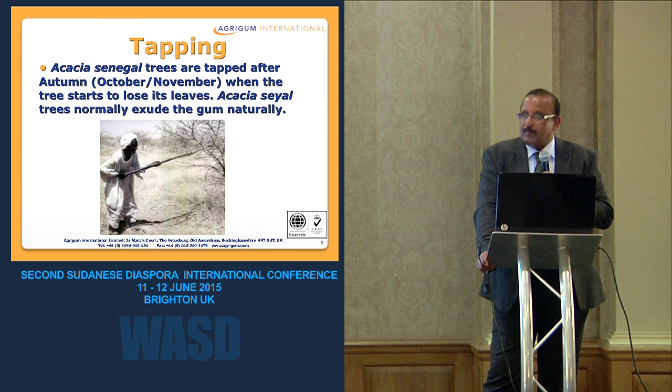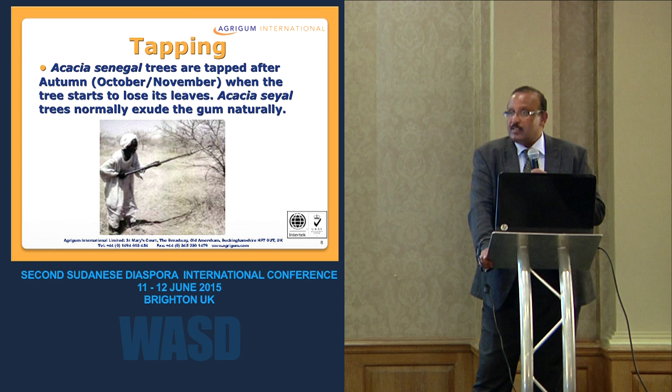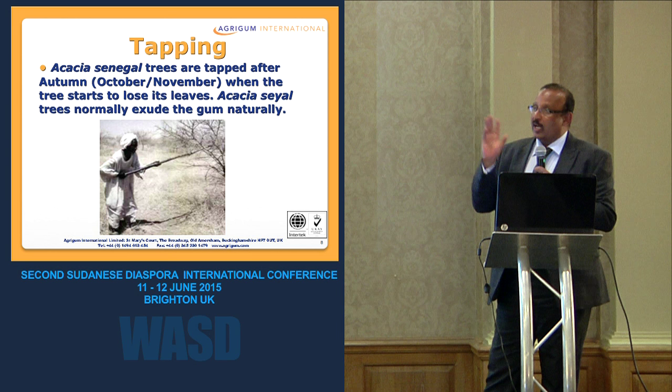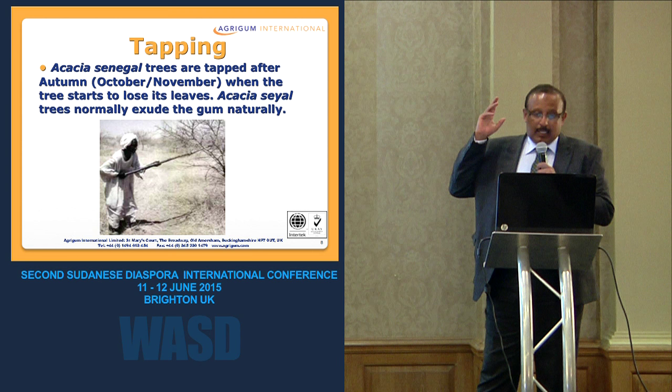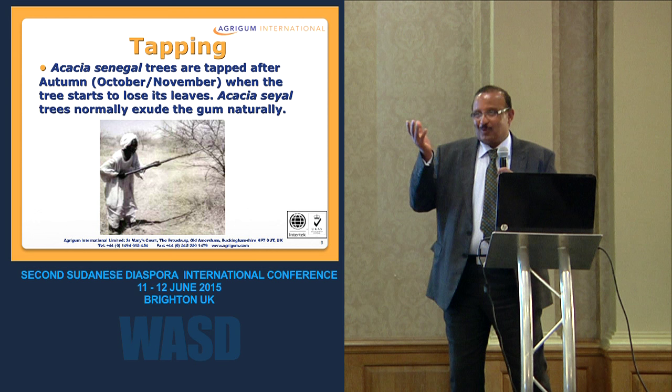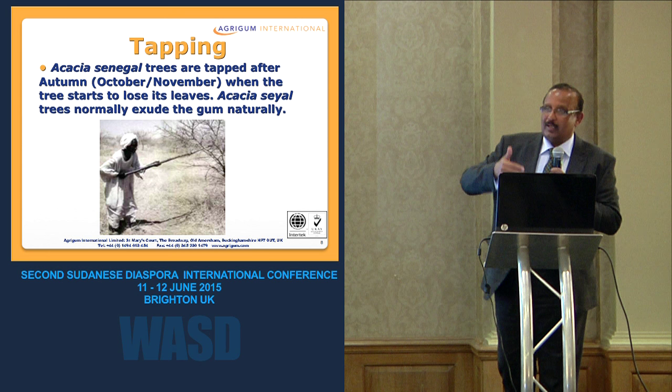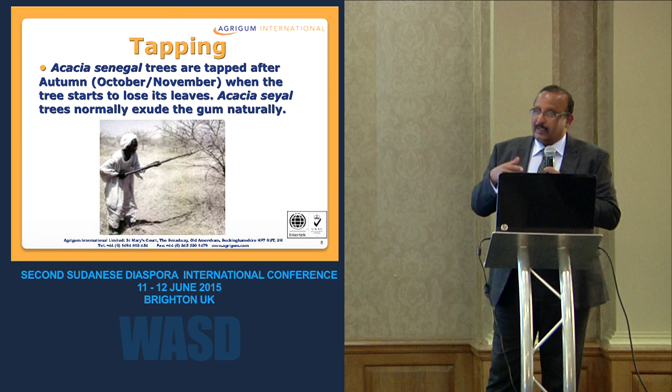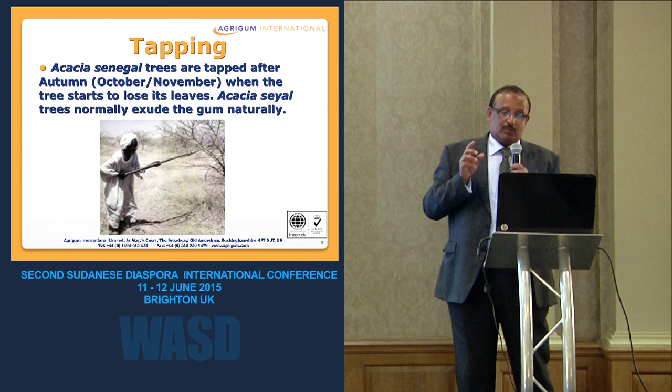The journey of the gum starts by tapping the tree, usually after the rainy season when the tree starts to shed its leaves — this is the sign that the water balance is right for tapping. When you tap the tree, it's as if you injure it, and as a self-defense mechanism the tree exudes gum to seal the wound. That is how the gum is produced.